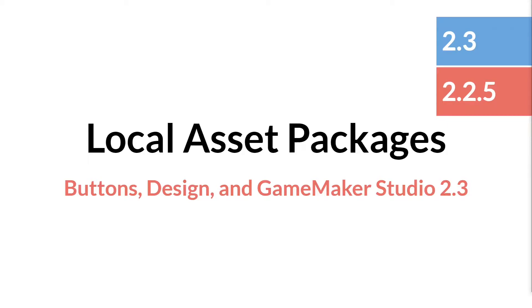Hello everyone, this is Sam Spade, and in this tutorial we're going to talk about creating local asset packages. Essentially what they are is they're like a marketplace asset, but one that you create that just exists locally on your computer. You can bundle up any type of sound, sprite, object, code, script file in 2.3. You put it into one asset, you save it out, and then you can load it back in to any other project. It's really great for making things that you can bundle together and use across multiple projects.